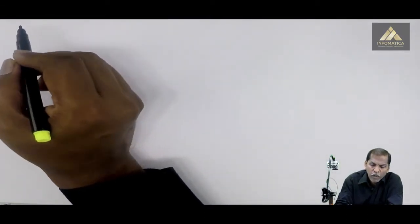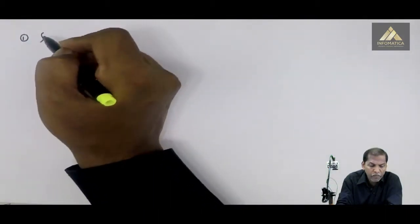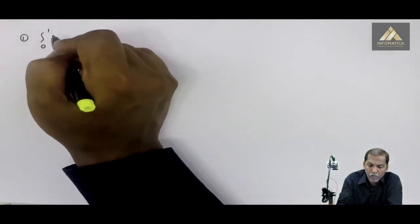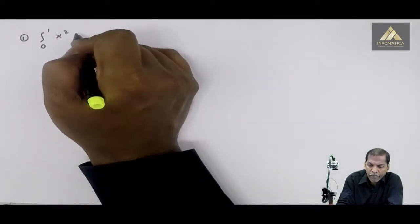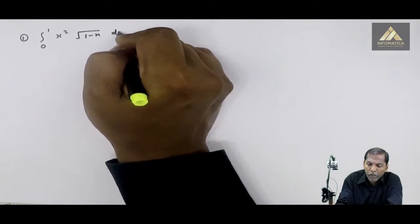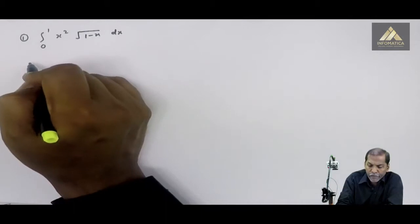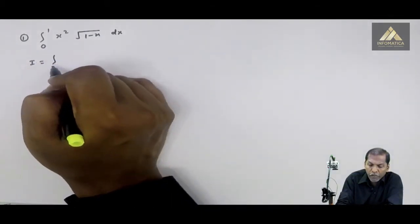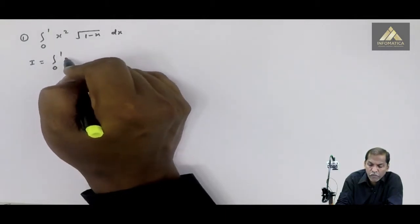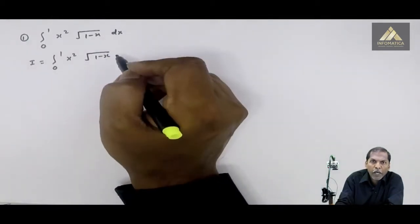Let us solve some problems related to the properties of definite integrals. This is the first problem: I equals integral from 0 to 1 of x squared into square root of (1 minus x) dx. Pehle question ko I se denote karte hai.